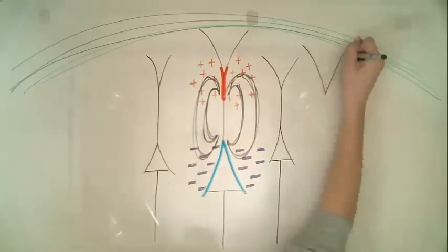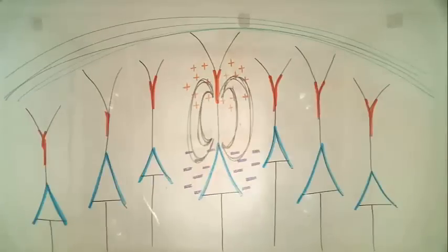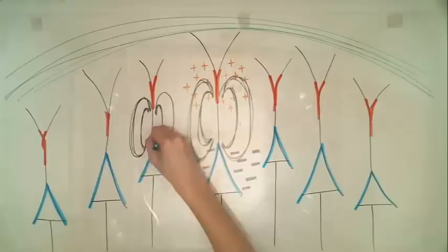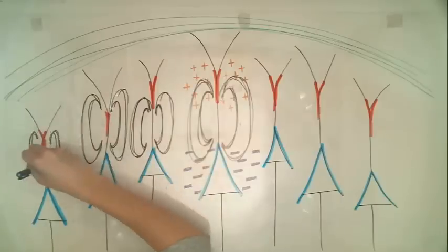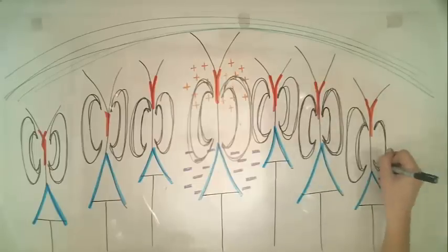It is important to remember that regardless of whether an action potential is reached or not, all postsynaptic potentials will contribute to the EEG signal. Every postsynaptic potential causes the charge inside the neuron to change, and the charge outside the neuron to change in opposition.